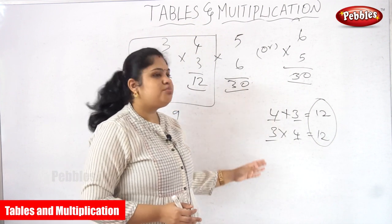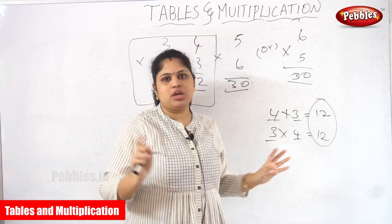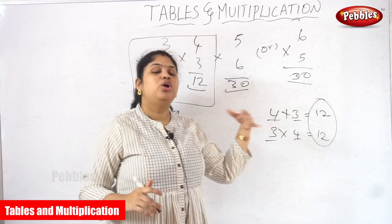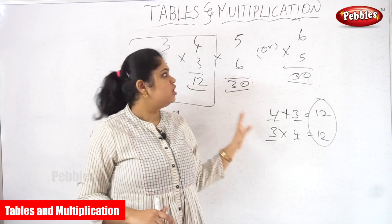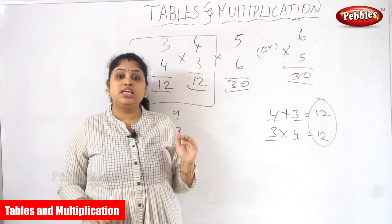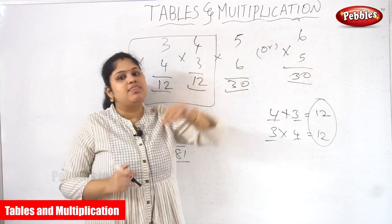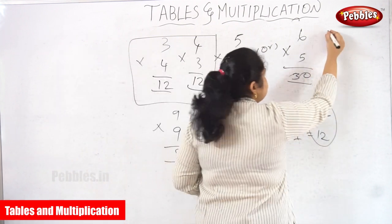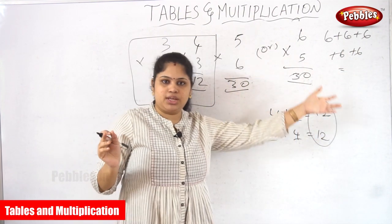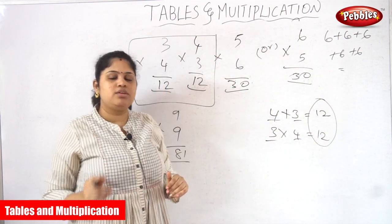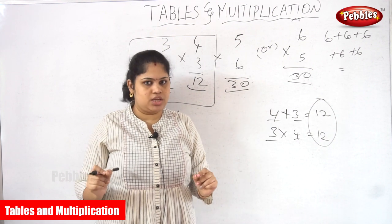Now we have seen single digit multiplications. The important point is to look at the combination of numbers — 4 into 3 and 3 into 4 are the same; 2 into 4 and 4 into 2 are the same; 8 into 6 and 6 into 8 give the same answer. We have also seen the behind process of multiplication — behind every multiplication there is addition. For example, 6 into 5 means 6 comes 5 times. To avoid that repeating addition, we learn multiplication with the help of tables.